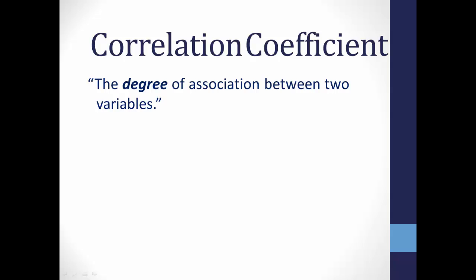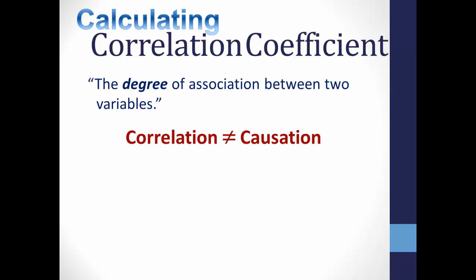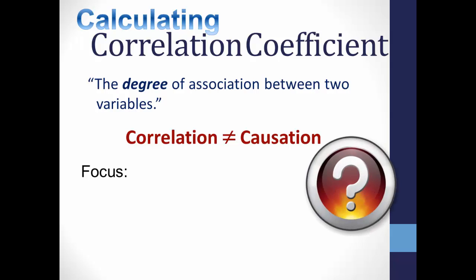If you understand the concept of correlation as being an association between two variables and how it should not be confused with causation, it's now time to learn how to calculate Pearson's r, also known as the correlation coefficient. That's what this video will focus on: how to calculate Pearson's r correlation coefficient.